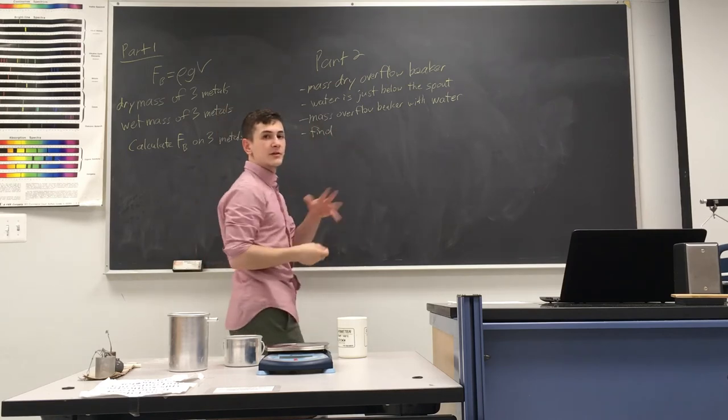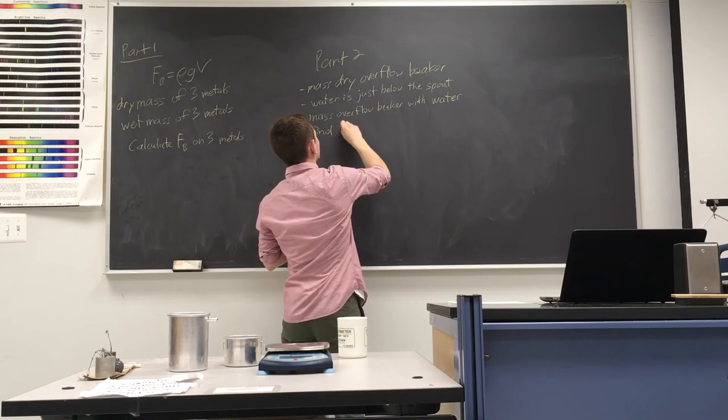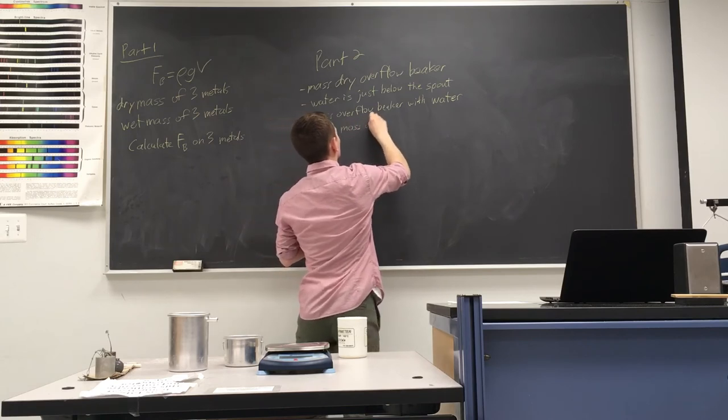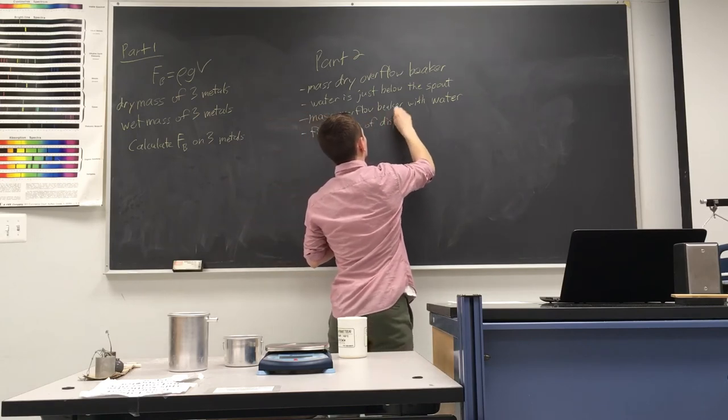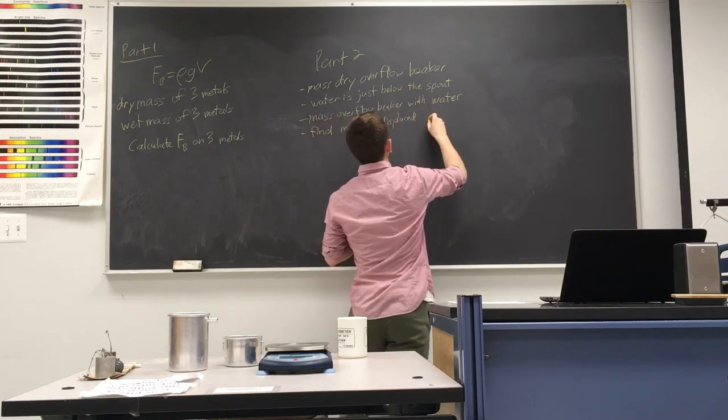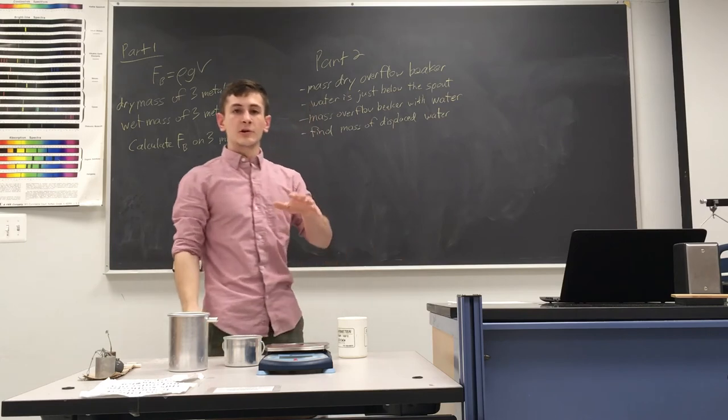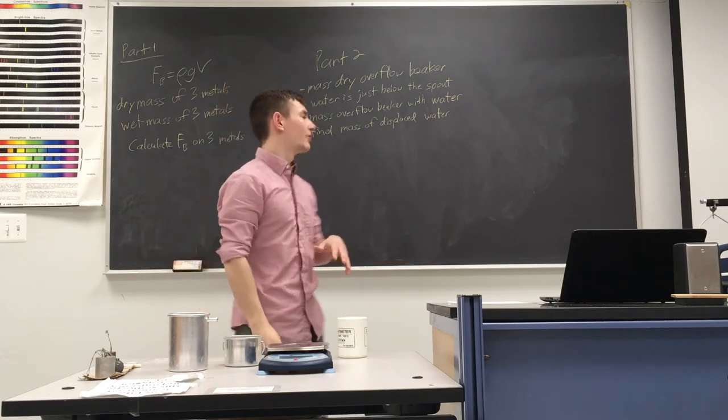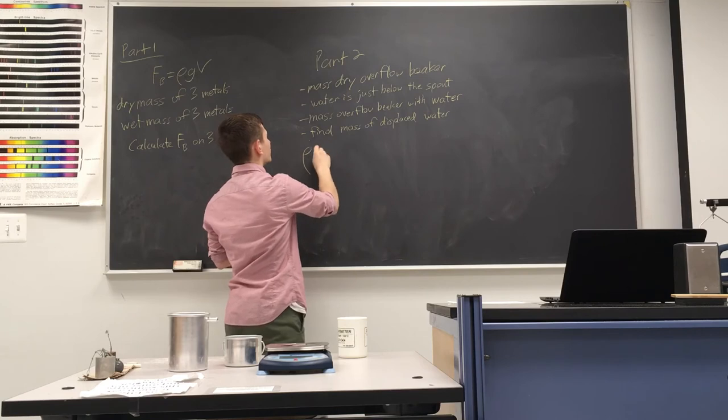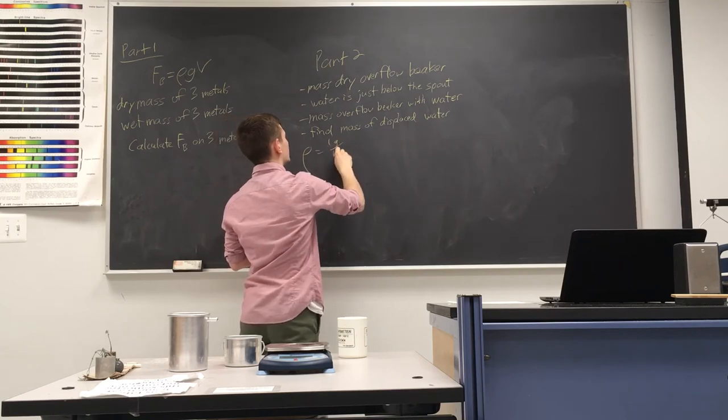And this is going to be different for each metal. Now, since we know the mass of the displaced water and we also know the density of water, which is one gram per milliliter or 1000 kilograms per meter cubed.